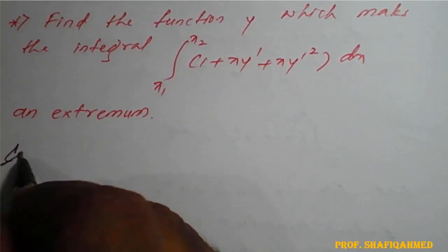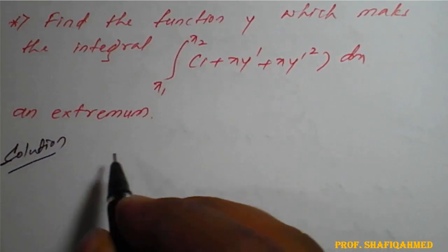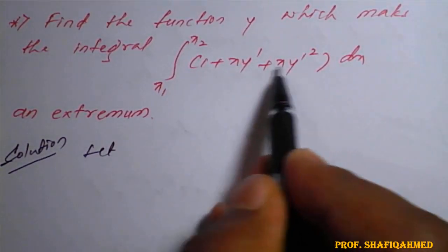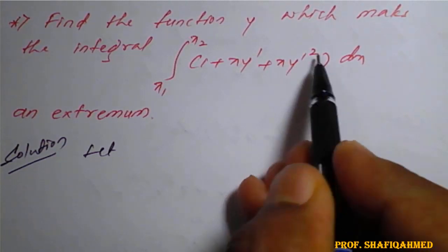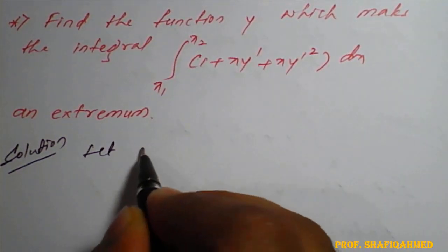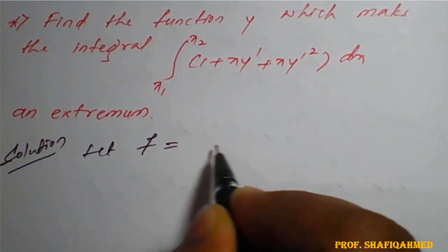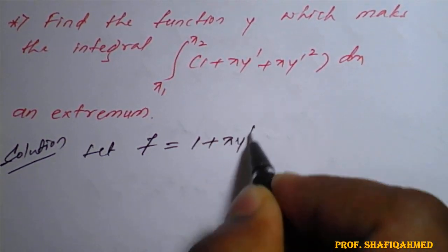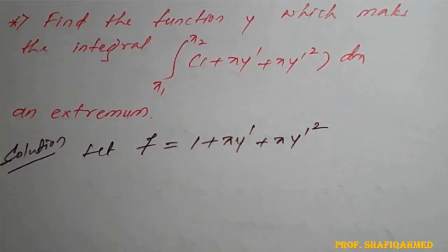So, solution. Let the inside function be f. So f is nothing but 1 plus x y dash plus x y dash square.